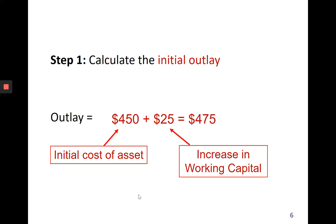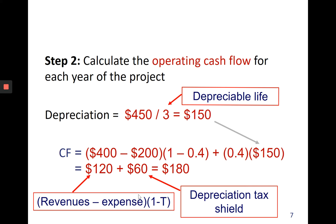Step one is to calculate the initial outlay. Our initial outlay is $450 million — the initial cost of purchasing the assets — plus we have to increase working capital by $25 million. Adding these two costs together, we get $475 million as our initial outlay.